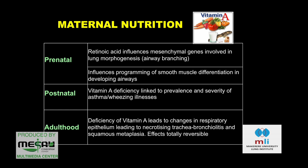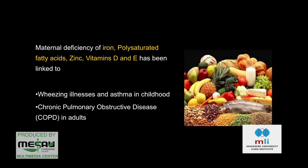In adults, vitamin A deficiency can lead to certain changes within the epithelium — what they call necrotizing tracheobronchitis and squamous metaplasia. In young adults these problems can be reversed, but for the child still in the womb, those problems are irreversible. Iron, polyunsaturated fatty acids, zinc, vitamin D, and E have also been studied, and deficiency of those has been associated with increasing illnesses and asthma in childhood and COPD in adults. If we want to prevent those huge figures, maybe we need to look at these micronutrients and make sure we can have them in the diet.